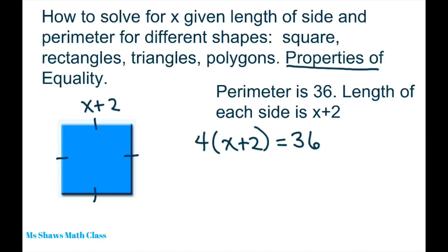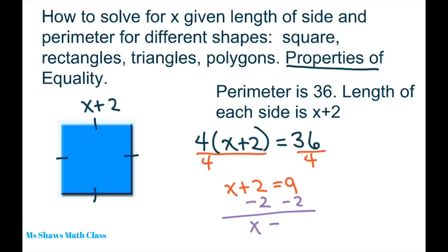To solve for X we're going to use our division property of equality and divide both sides by 4. So we get X plus 2 equals 9. Then we're going to use our subtraction property of equality and subtract 2 from both sides and you get X equals 7. So we solved for X and each of these sides is 9. This is just the introduction to everything, so let's move on to another one.